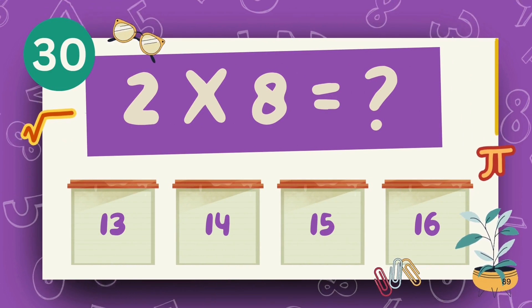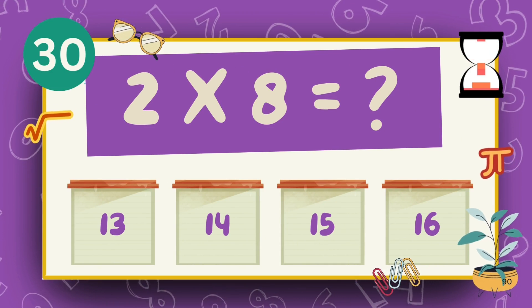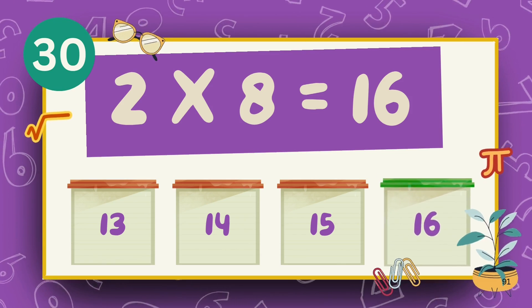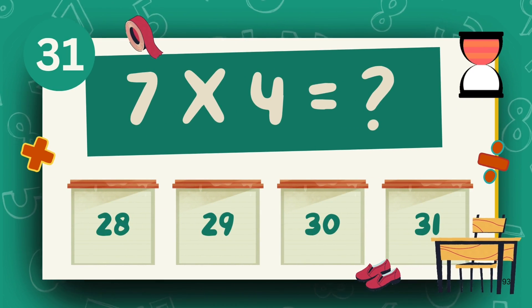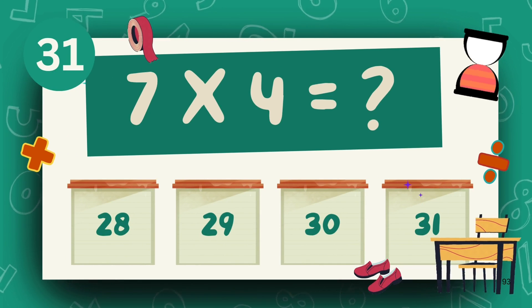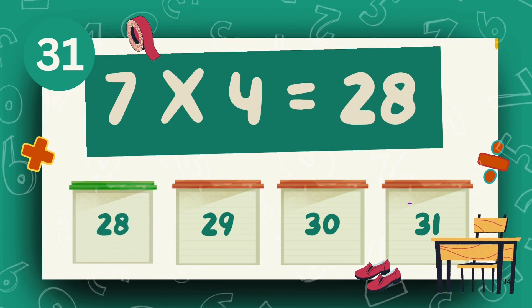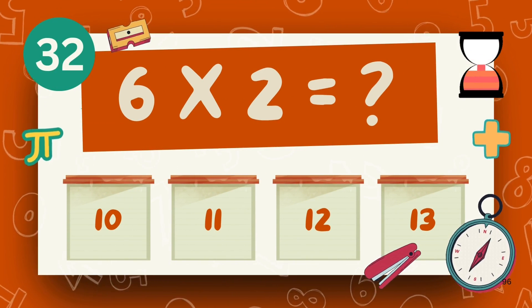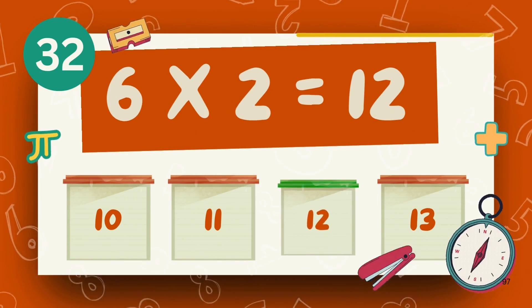What is 2 multiply 8? The answer is 16. What is 6 multiply 4? The answer is 24. What is 6 multiply 2? The answer is 12.